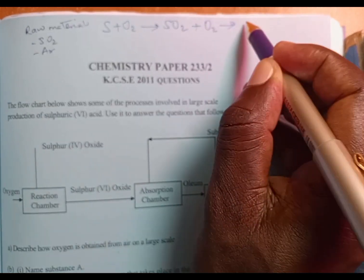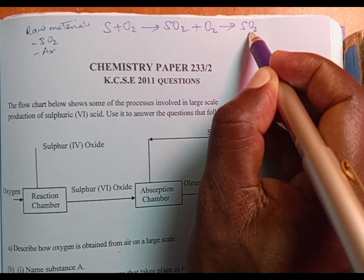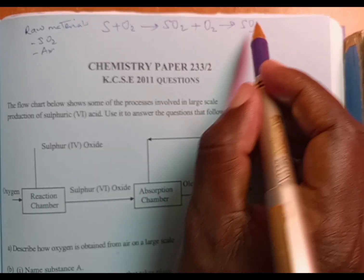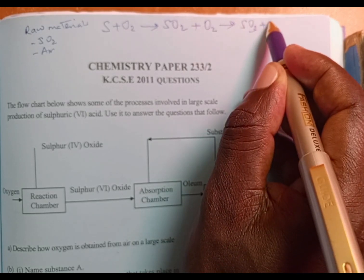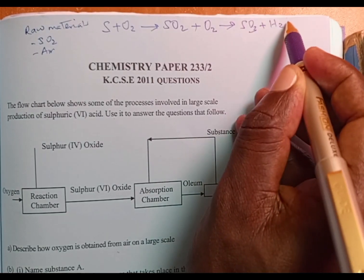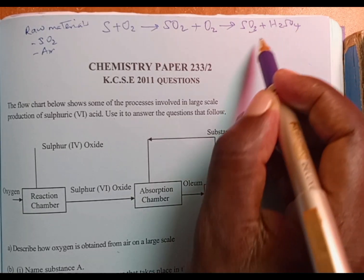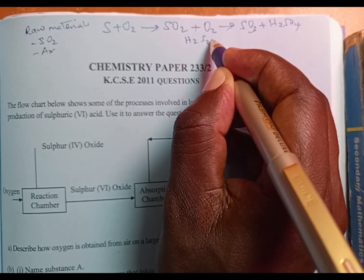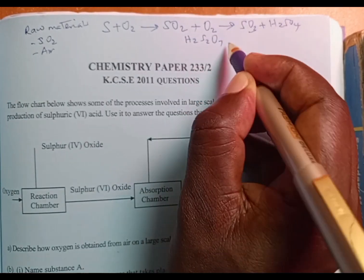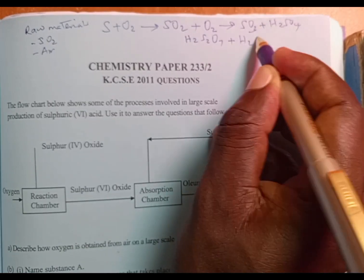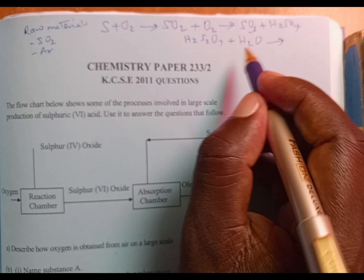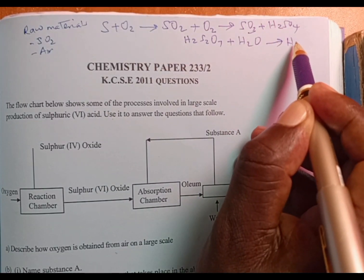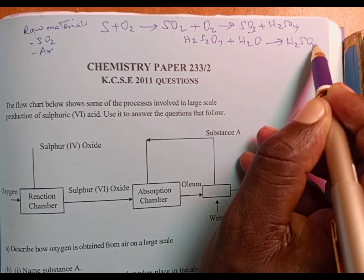Then sulfur trioxide is dissolved in concentrated sulfuric acid to form oleum, which is H2S2O7. Then oleum is dissolved in water to give us concentrated sulfuric acid, H2SO4.